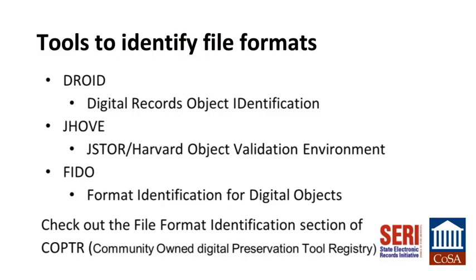Droid is a software tool designed to perform batch identification of file formats. The tool can also generate checksums and collect file-level metadata. Jhove is a file format identification, validation, and characterization tool. It is implemented as a Java application and is usable on any Unix, Windows, or OSX platform with appropriate Java installation. FIDO is a command line file format identification tool written in Python. For other tools, you can also check out the file format identification category in the Community-Owned Digital Preservation Tool Registry, COPTER, at copter.digipress.org.